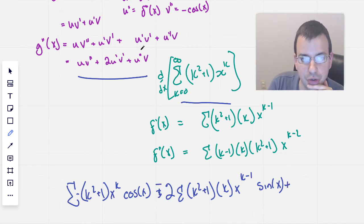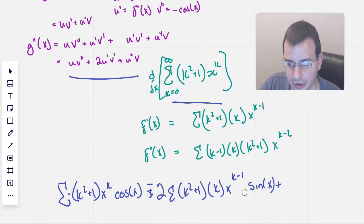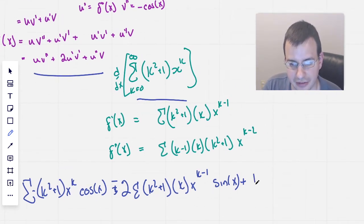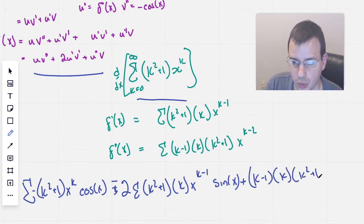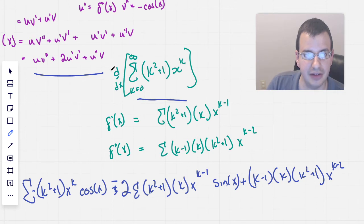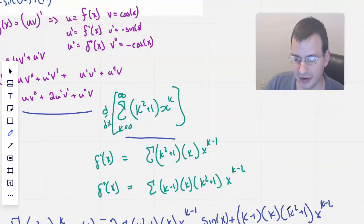Plus u double prime. U double prime is the bottom one. So we have (k - 1) times k times (k² + 1) times x to the k minus 2. And then we have v, which is cosine of x.